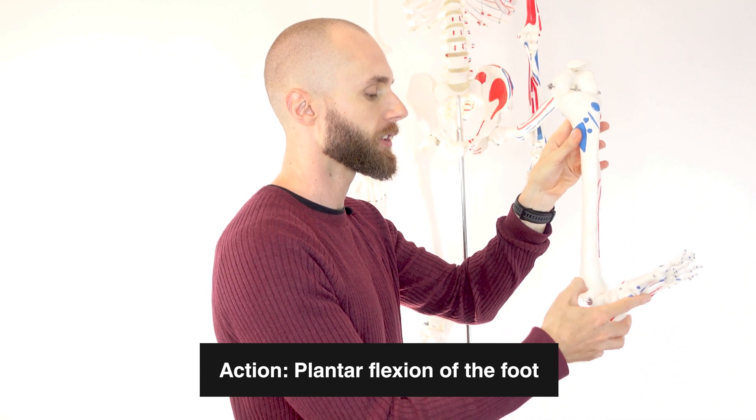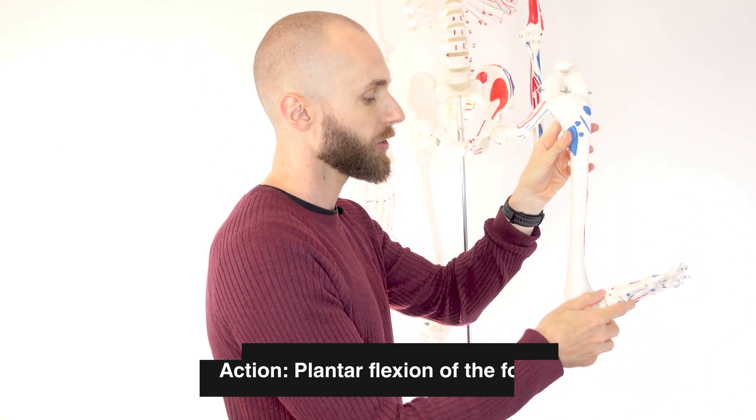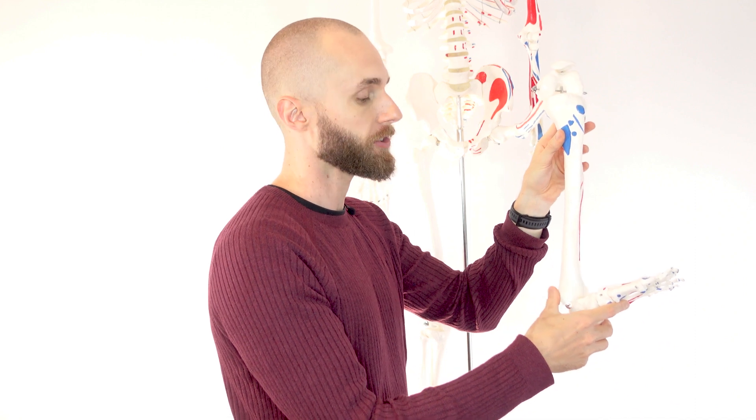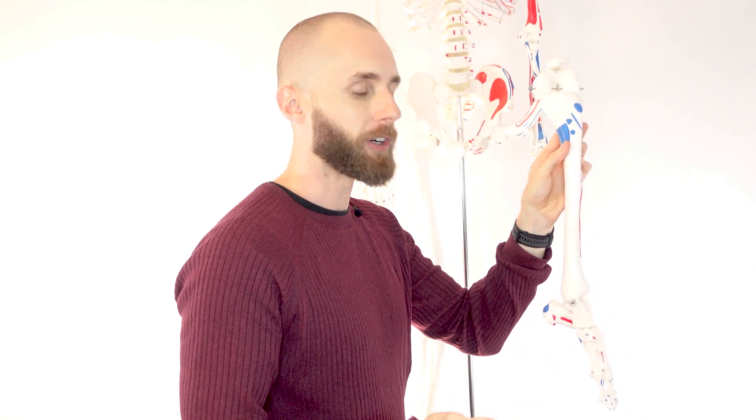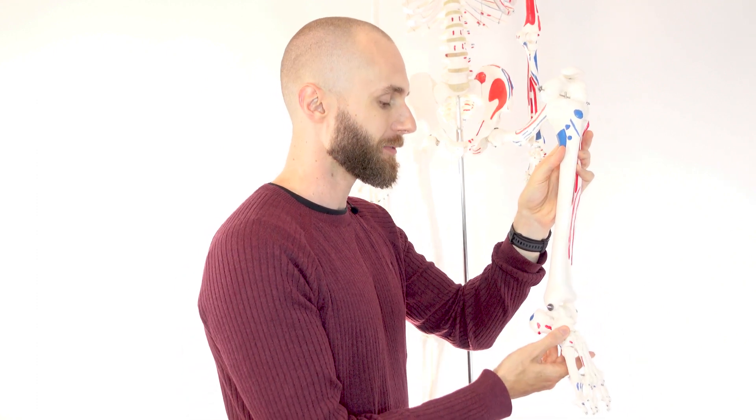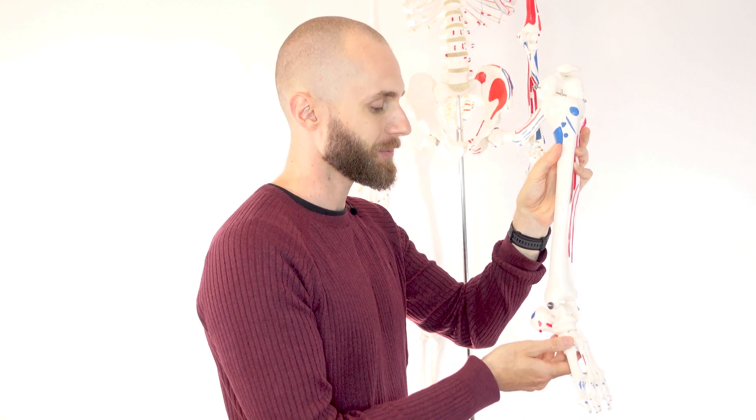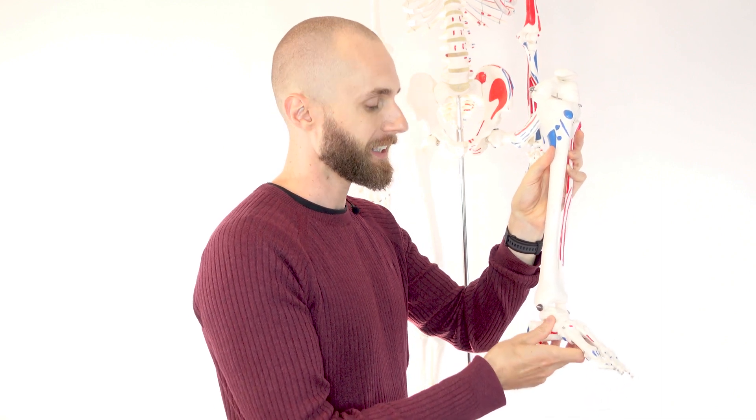If the ankle joint flexes like that, that's the opposite and that's known as dorsiflexion. And a good way to remember the difference between the two of them is plantar flexion would be like planting your foot on the floor. Now we're going to have to swap over to a different view for the rest of the actions because unfortunately the skeleton is not really flexible enough to show you them.